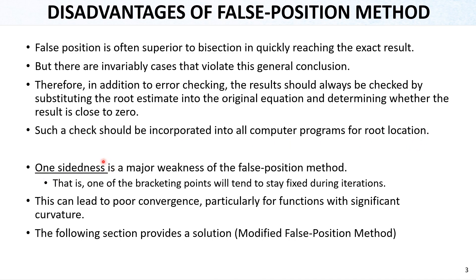Regarding one-sidedness: the lower bound can stay always as the lower bound, or the upper bound can stay as the same upper bound. This is called one-sided, and it can be a major weakness for the false position method. One of the bracketing points will tend to stay fixed during the iterations, and it will converge slowly from one side only, leading to poor convergence — particularly for functions with significant curvature. In the previous slide, you saw that the steep curvature of the function was a problem. For such cases, you can just use bisection instead.